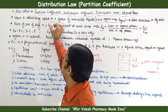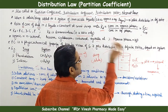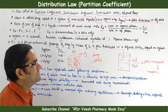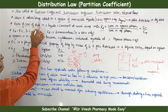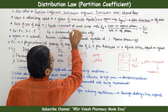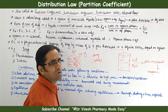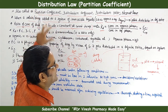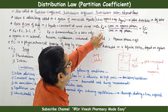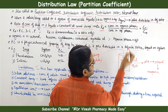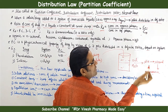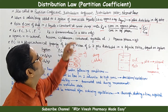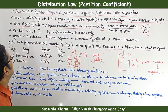So when a solute or drug is added to a system of two immiscible liquids — oil and water, or organic and aqueous layer — the solute distributes itself in a definite ratio. The ratio of the concentration of drug in the two liquids is constant at constant temperature, because temperature affects solubility. This is what distribution law states, represented as KD = C(organic) / C(aqueous).